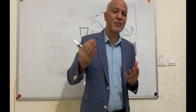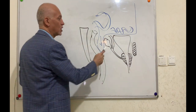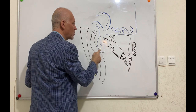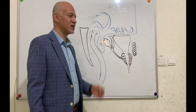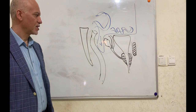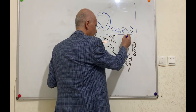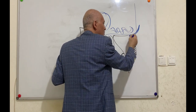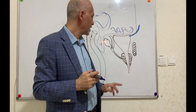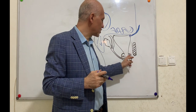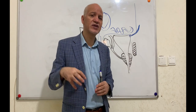The relation of the base or posterior surface of the bladder in male: it is related to the ampulla of the vas deferens, seminal vesicles, the rectovesical pouch, and the rectum. The apex is related to the median umbilical ligament, which was the urachus. The neck of the urinary bladder is related to the prostate.